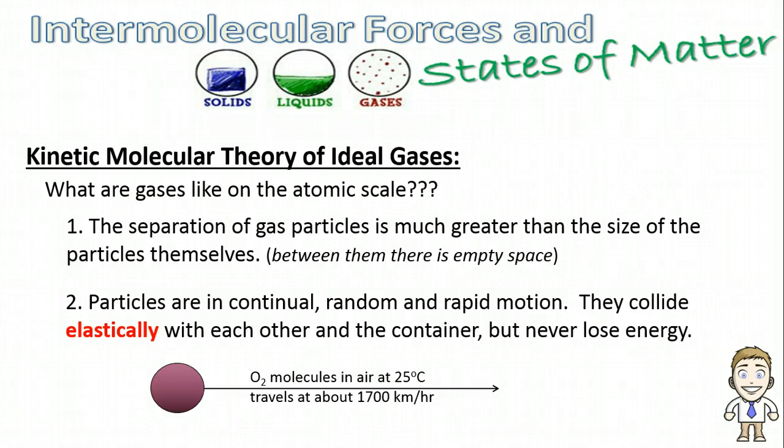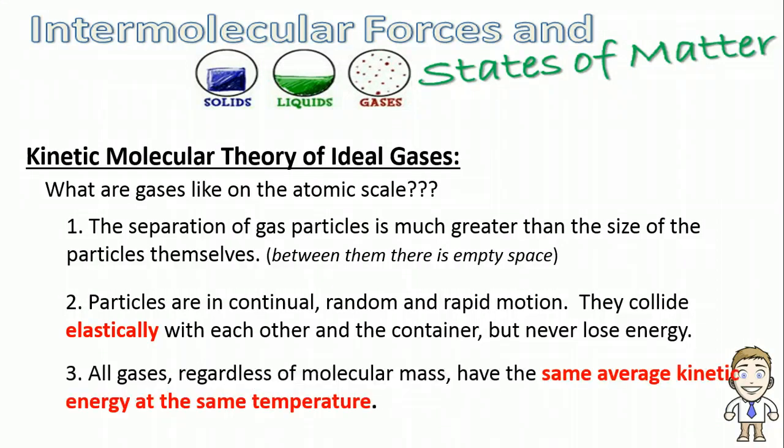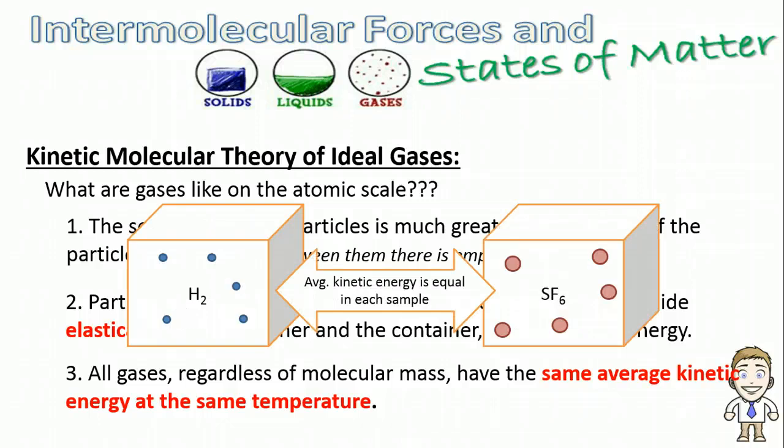Finally, part three of the theory says that all gases, regardless of their molecular mass, will have the same average kinetic energy at the same temperature. This means that you could take a very small gas like H2 hydrogen and a very large molecule like sulfur hexafluoride, and if they were at the same temperature, those two gases would actually have the same average kinetic energy. That might not seem like much right now, but it's actually going to be a really important part later on.